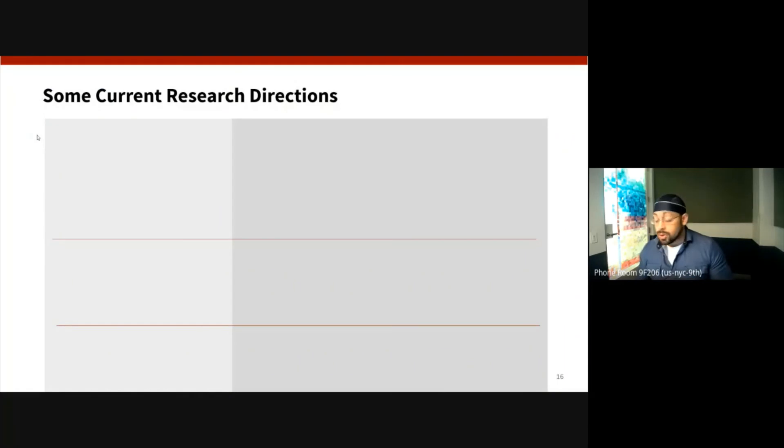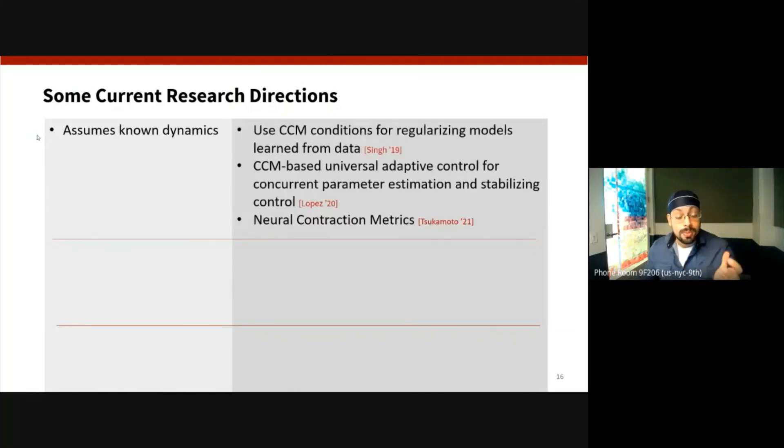So there are some limitations of this approach, and I want to point out some interesting new exciting research directions that are being explored currently. The first big limitation is that we assume that the dynamics are known, and so one of the ways that this has been explored on relaxing this assumption includes how to use data-driven techniques, how to learn models from data and how to regularize these models using contraction techniques. There's also been work into looking at universal adaptive control by doing concurrent parameter estimation and stabilizing control with CCMs, and then using neural networks to in fact learn the metric itself from finite sets of sample trajectories.